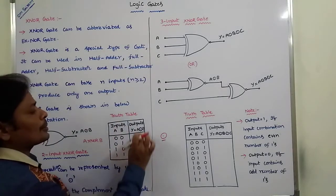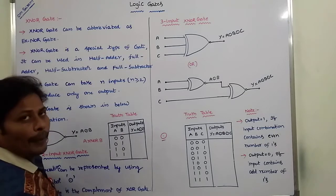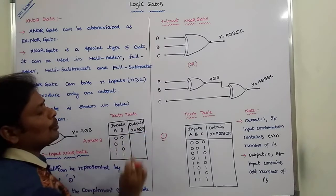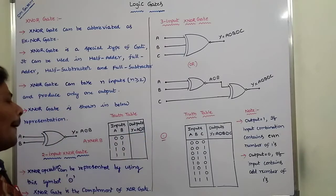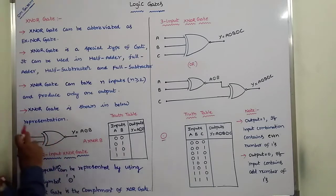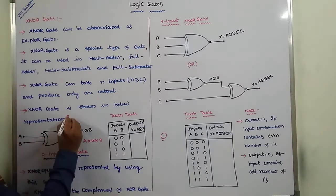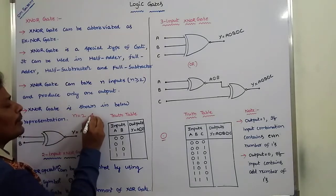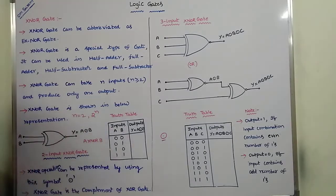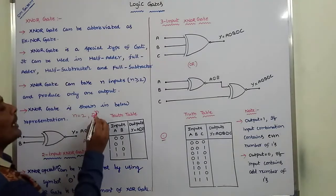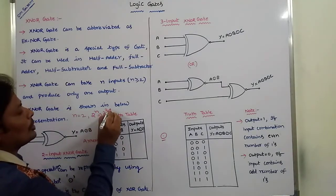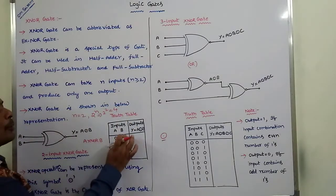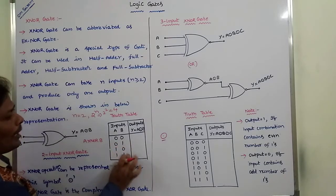This is the truth table of the exclusive NOR operation. Inputs are A and B, and output Y is equal to A exclusive NOR B. We are applying N equal to 2 inputs, so there are 2 to the power N — that is 4 — input combinations: 0,0 then 0,1 then 1,0 then 1,1.